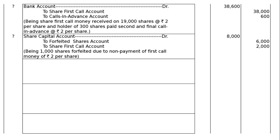Next, forfeiture of the 1,000 shares who failed to pay. Share capital account debited: 1,000 shares Rs. 8 called up — final call of Rs. 2 has not been made — that is 1,000 into 8 = Rs. 8,000. To forfeited shares account: he paid application Rs. 2 and allotment Rs. 4 = Rs. 6 — 1,000 into 6 = Rs. 6,000. To share first call account: 1,000 into 2 = Rs. 2,000, which he could not pay. Narration: being 1,000 shares forfeited due to non-payment of first call money of Rs. 2 per share.